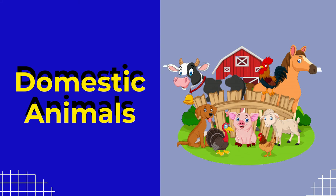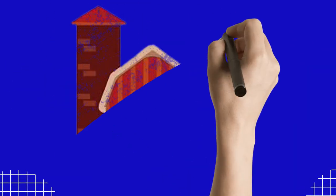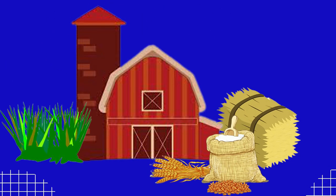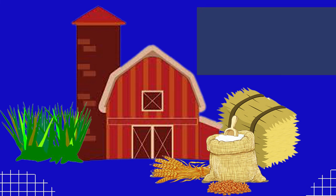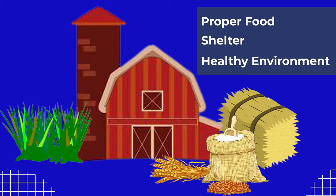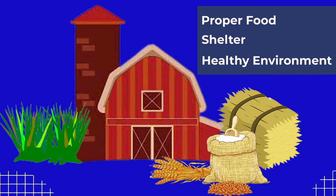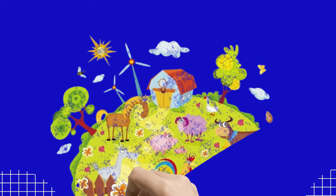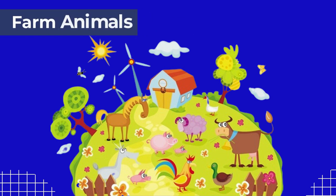Since domestic animals are dependent on us for everything and they give us so many benefits, we should take very good care of them by providing them with proper food, shelter, and a healthy environment. We should not put too much burden on them and should not make them work too hard. We hope now you have learned about farm animals and their benefits. If some concepts are not clear, replay the video, and if you still have questions, ask your teacher.